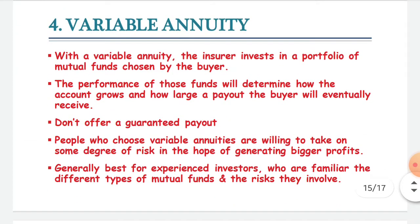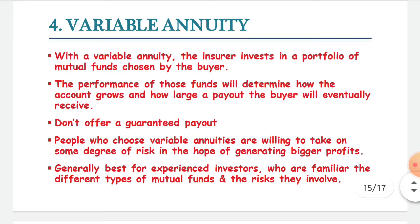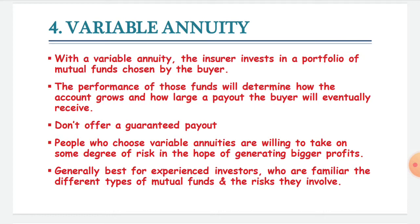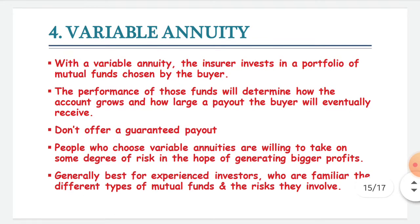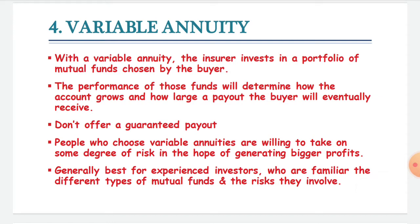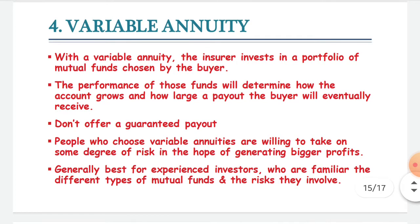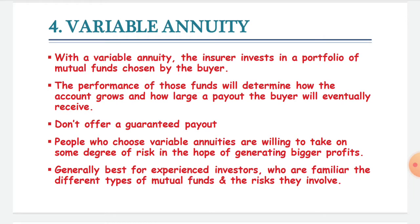In a variable annuity, the insurer invests in a portfolio of mutual funds chosen by the buyer, and the performance of those funds will determine how the account grows and how large a benefit you will get from the annuity. It doesn't offer a guaranteed payout as it depends on the financial markets. People who choose variable annuity are willing to take on some degree of risk to generate greater profits, so it's better suited for experienced investors who are familiar with different types of mutual funds and the risks they involve.